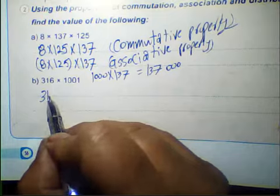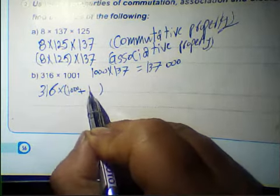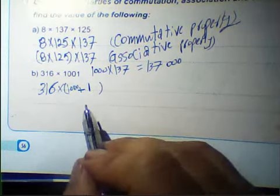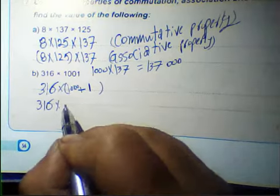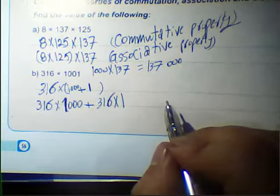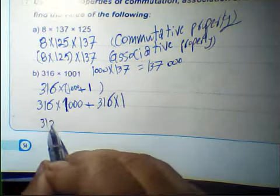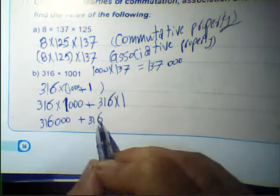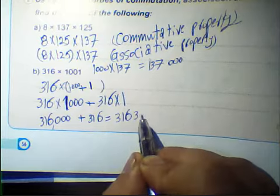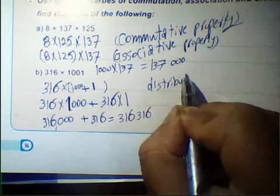316 multiplied by 1001: we can write 1001 as 1000 plus 1, then use the distributive property. So 316 multiplied by 1000 plus 316 multiplied by 1 equals 316,000 plus 316, which equals 316,316.